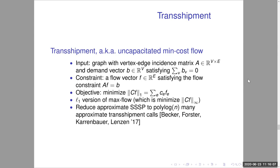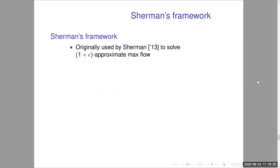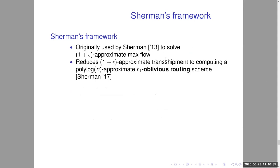To solve transshipment, we follow Sherman's framework from his original breakthrough paper on max flow. We reduce 1+ε approximate transshipment to what we call a polylog approximate L1 oblivious routing scheme. Sherman reduces 1+ε approximate max flow to a polylog approximate L∞ oblivious routing scheme — also known as a traditional oblivious routing scheme. Oblivious routing is actually a harder problem than transshipment or max flow, but here we only need a polylog approximation, and that is enough to boost to 1+ε in the slightly easier problem.